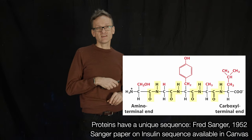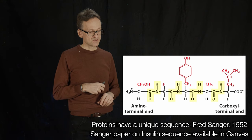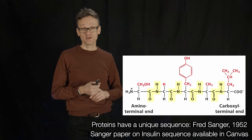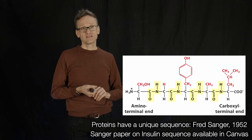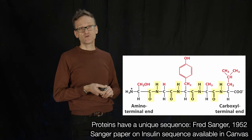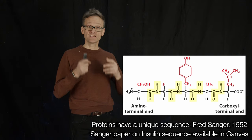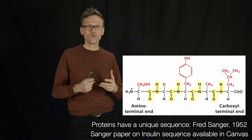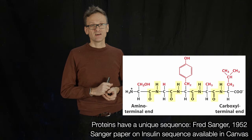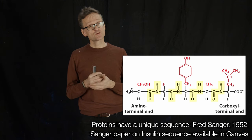Already in 1906, Emil Fischer proposed that proteins are actually polymers that consist of amino acids. In 1952, Fred Sanger was able to directly sequence the protein insulin and show that insulin has a unique sequence — it's always the same sequence of amino acids. And in 1953 came the structure of DNA.